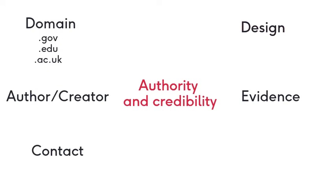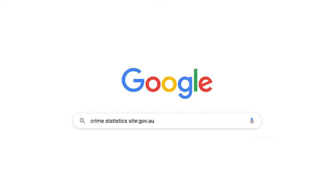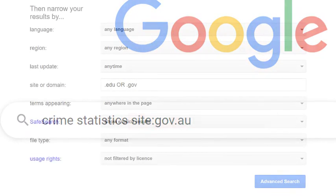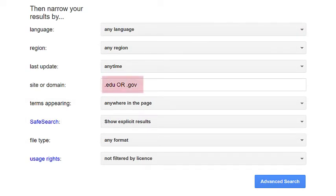Is evidence provided to support claims? Does the writing provide more fact or opinion? Opinions are unsubstantiated claims. Are the sources properly referenced? If you can't tell who the author is or who created the website, you may want to select another website. You can limit a Google search to a specific domain by adding site, colon and the domain to your search words. Alternatively, you can choose Google's advanced search and use the following settings.